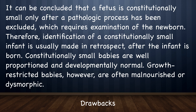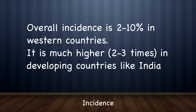A fetus can be concluded to be constitutionally small only after a pathologic process has been excluded, which requires examination of the newborn. Therefore, identification of a constitutionally small infant is usually made in retrospect after the infant is born. Constitutionally small babies are well proportioned and developmentally normal, whereas growth-restricted babies are often malnourished or dysmorphic. Overall, the incidence of IUGR is 2–10% in western countries and 2–3 times higher in developing countries like India.